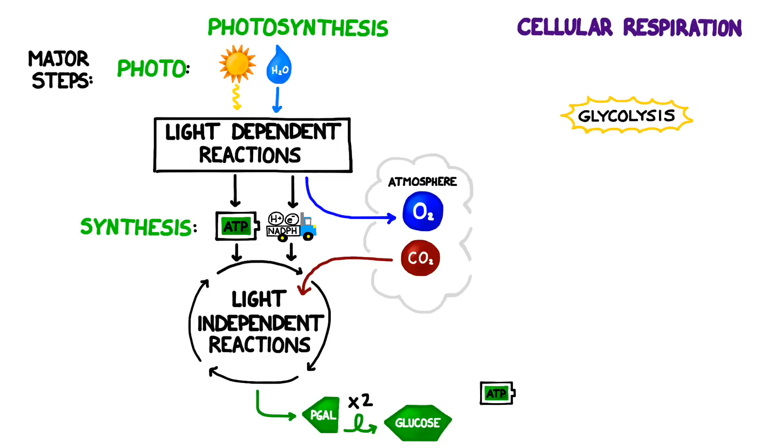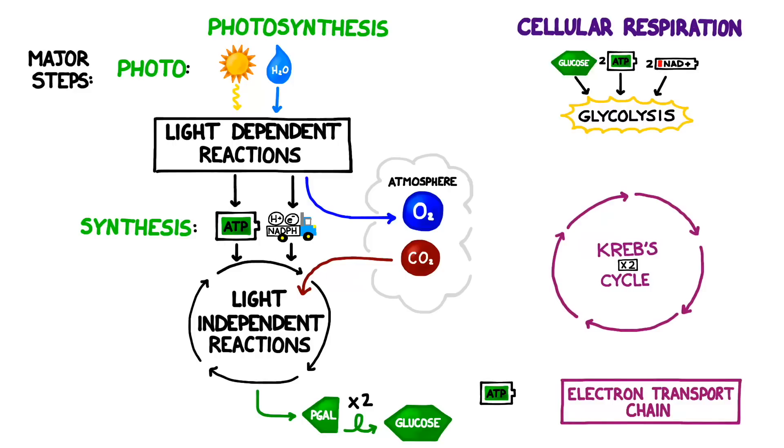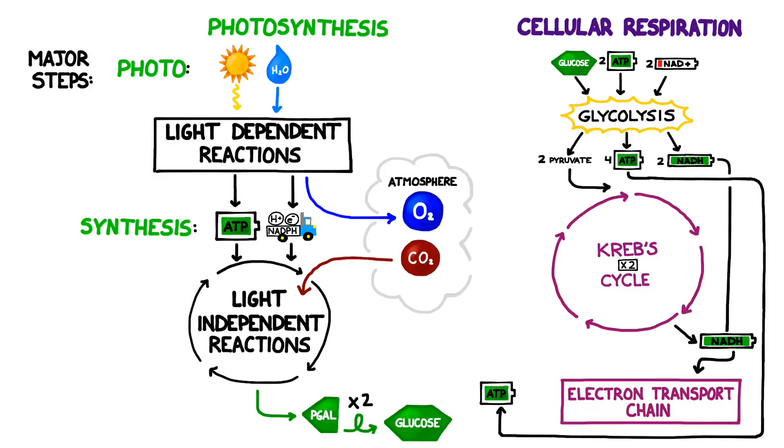The three major steps are glycolysis, the Krebs cycle, and the electron transport chain. Glycolysis runs on glucose as well as an electron carrier called NAD plus and we also need to kick start the reaction with a little bit of ATP. Glycolysis produces a molecule called pyruvate, a little more ATP, and some recharged electron carriers called NADH that we'll use later on.